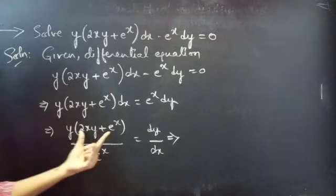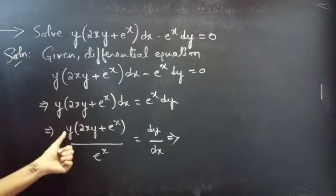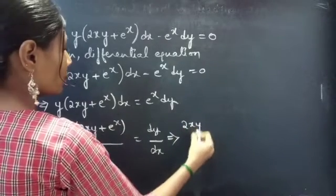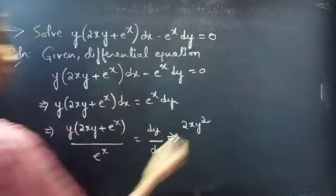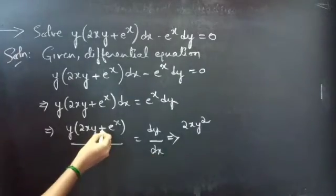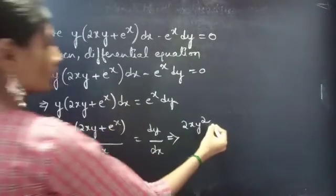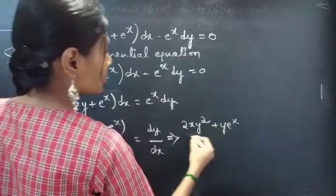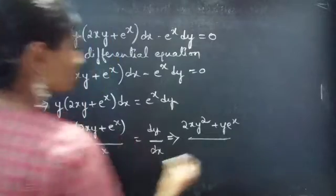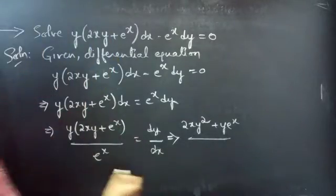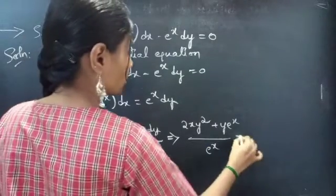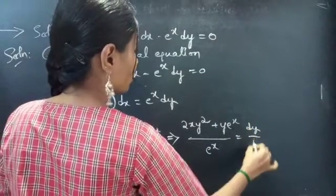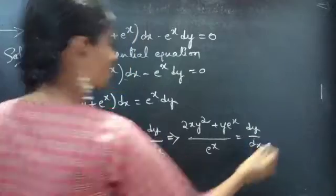Now multiply these two terms with y, you will get 2xy² plus y into e^x by e^x equals to dy by dx.